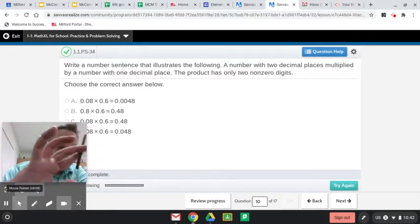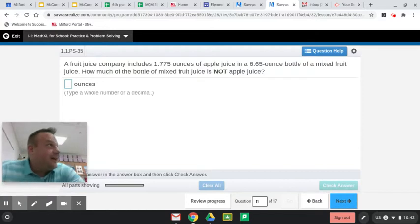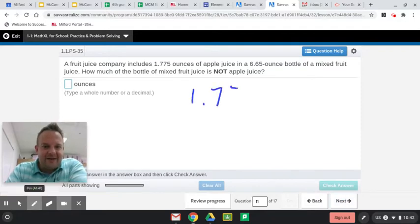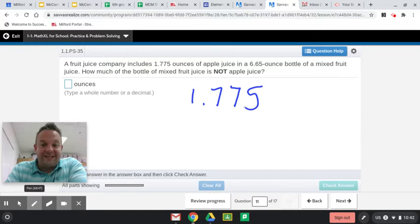This is my first time using the stylus on my new board. If you check out Topic 7 and Topic 8, which I've already done with my students, you can see that I was using a dry erase board behind me. If Fruit Juice Company includes 1 and 775 thousandths ounces of apple juice in a 6 and 65 hundredths ounce bottle of mixed fruit juice, how much of the bottle of mixed fruit juice is not apple juice? It's not. So that means if this is apple juice and if this is apple juice and this is mixed fruit, we're going to have to subtract.